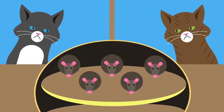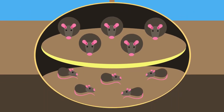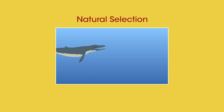Those with better eyesight will be able to avoid being eaten by predators, so are more likely to survive to reproduce and pass on this advantage to their offspring. If you want to learn more about natural selection, watch this video.